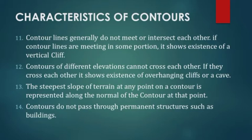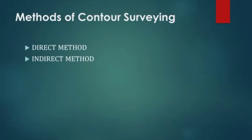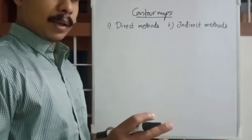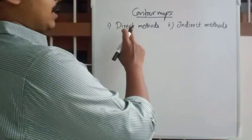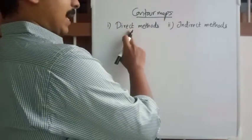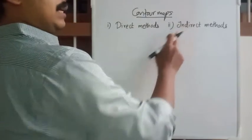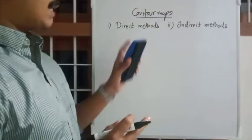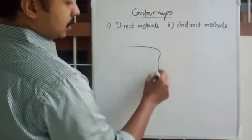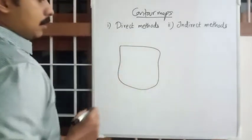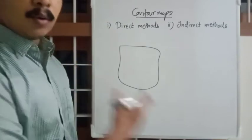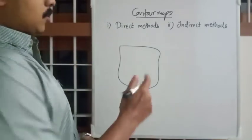So those are the 14 characteristics of contours. We now move on to methods of contour surveying. There are direct methods and indirect methods. In the direct method, if this is the plot area, it is a very tedious method and it will take a long time to complete.